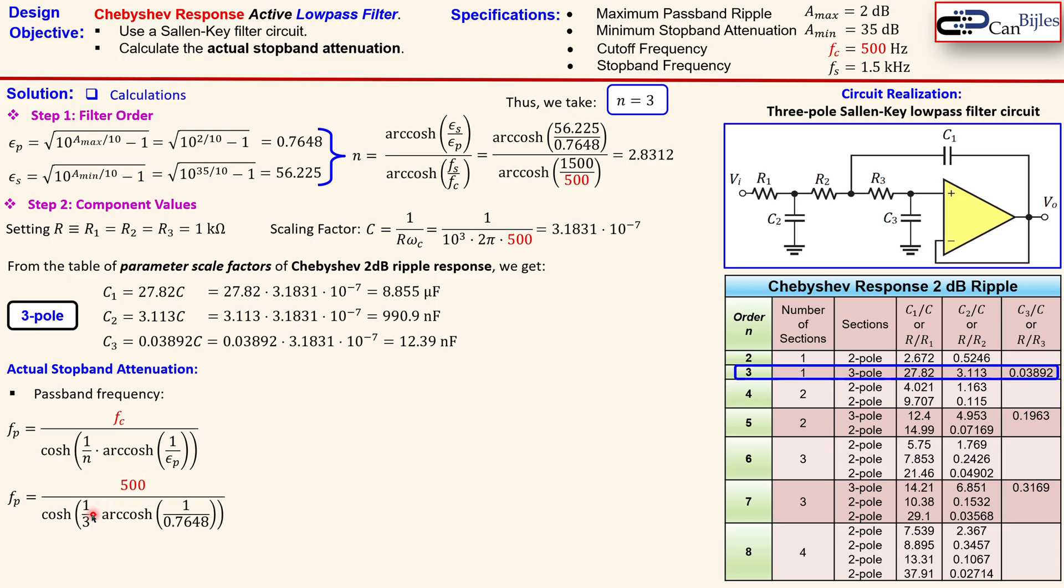So substitute here the values, 500, then 1 over 3, of course, because that's the integer. And then you also have the epsilon p, which is shown here, 0.7648. And that will result in 484 Hz approximately. That's the passband frequency.